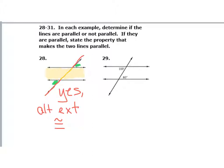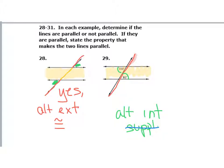Looking at the next figure, my two angles are on alternate sides of the transversal — one on the left, one on the right — and they're in the shaded interior area, so they are alternate interior. They're not congruent though — 180 degrees are supplementary, not congruent. Alternate interior angles need to be congruent for parallel lines, so these lines are not parallel.